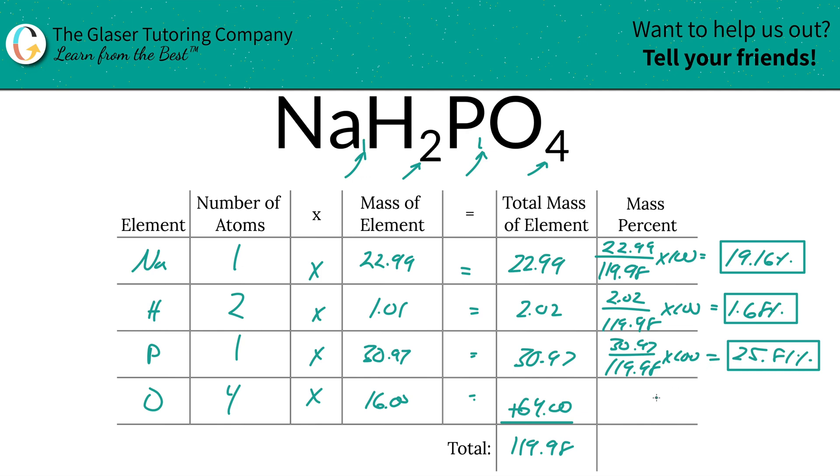And then last but not least, we got oxygen. So 64—I'm not going to write in the zeros, they don't really do anything to the calculation except affect the number of significant figures, so just be careful to take that into account at the end. That's going to be 53.34 percent. Depending upon how particular your professor or teacher is, they might take off points for that. When you add this all together, you should get 100.